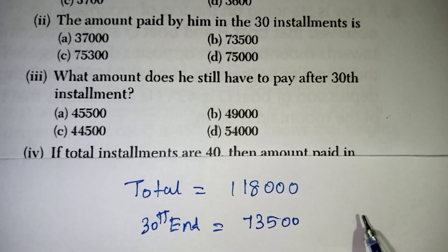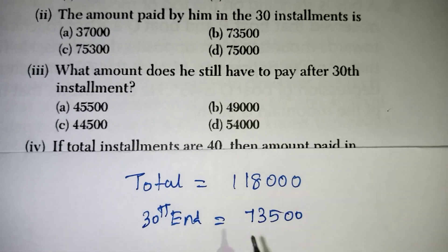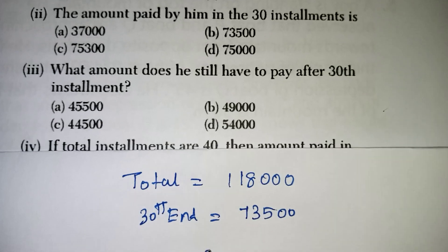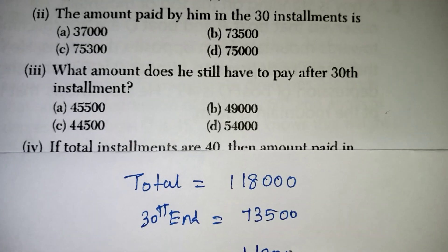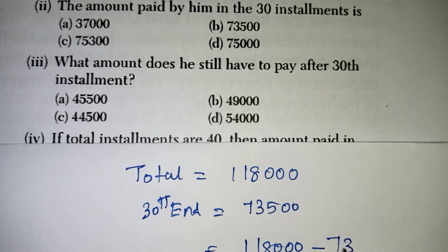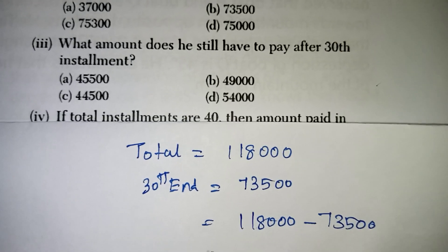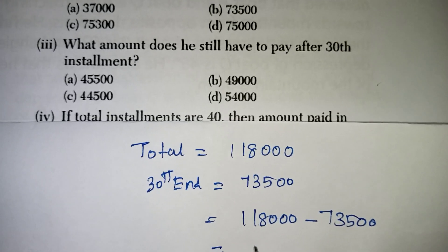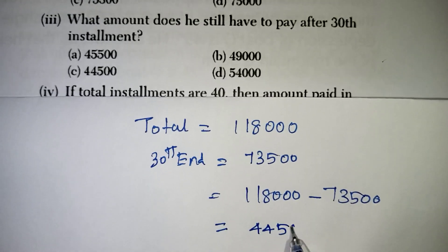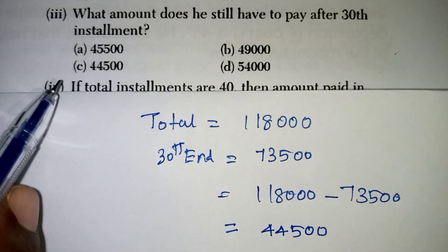So, how much they have to pay still? So, we have to subtract these two. So, they need to pay is 1 lakh 18,000 minus 73,500 because this is amount they have paid up to the 30th installment. If we are subtracting we are getting 44,500 that is your C option.